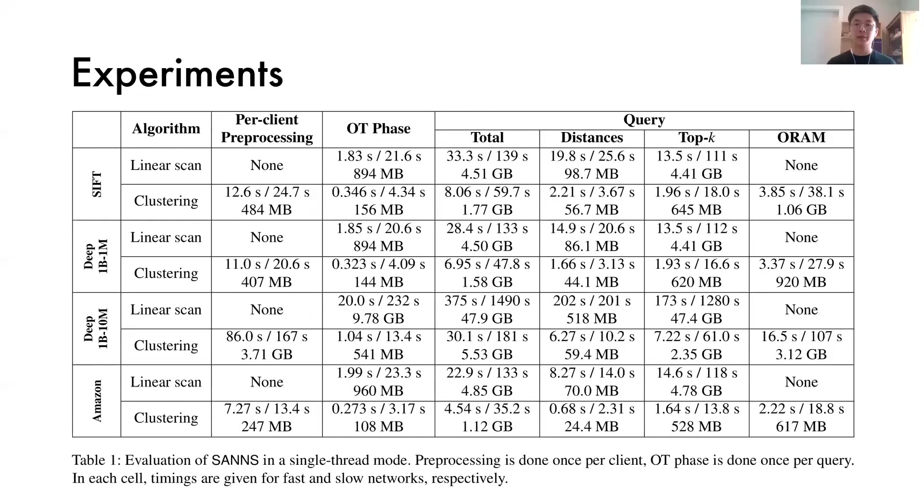Here are some experimental results for our protocols. We consider four different datasets: SIFT, DEEP1B-1 million, DEEP1B-10 million, and Amazon. The last one is an Amazon database on reviews. We can see that the clustering algorithm for large database outperforms significantly the linear scan algorithm. In the Amazon database case, we only need 7.27 seconds to perform one k-nearest neighbor query.